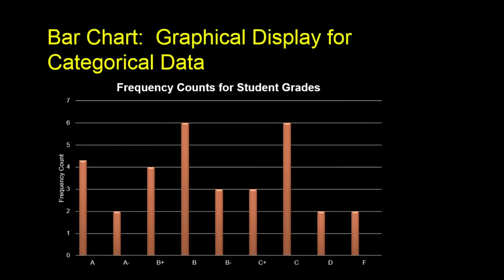Someone once said a picture is worth a thousand words, and that certainly is true in statistics. If we take the data from a long list or even from a summary table and show it as a graph instead, it becomes much easier to understand, especially for non-quantitative people. One way to present categorical data graphically is to use a bar chart to show the data and summarize the distribution. On one axis we label the classes or categories, and on the other axis we label the scale — either frequency counts, relative frequency counts, or percentages.